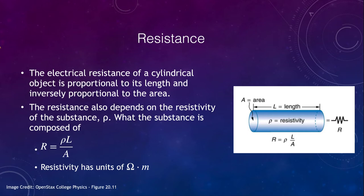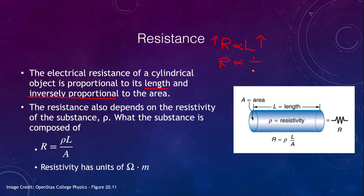The resistance of a cylindrical object — like a wire — is proportional to two things: it's proportional to its length and inversely proportional to its area. If resistance is proportional to length, that means if length increases, resistance increases. Resistance is inversely proportional to area, meaning one divided by the area — so if area increases, resistance decreases. We can see how things change as you change the length or the area.